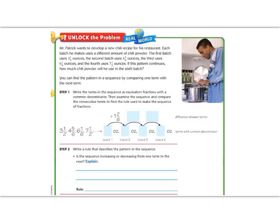Here we go 5th graders, lesson 6.8. Let's begin by reading the Unlock the Problem. Mr. Patrick wants to develop a new chili recipe for his restaurant. Each batch he makes uses a different amount of chili powder.